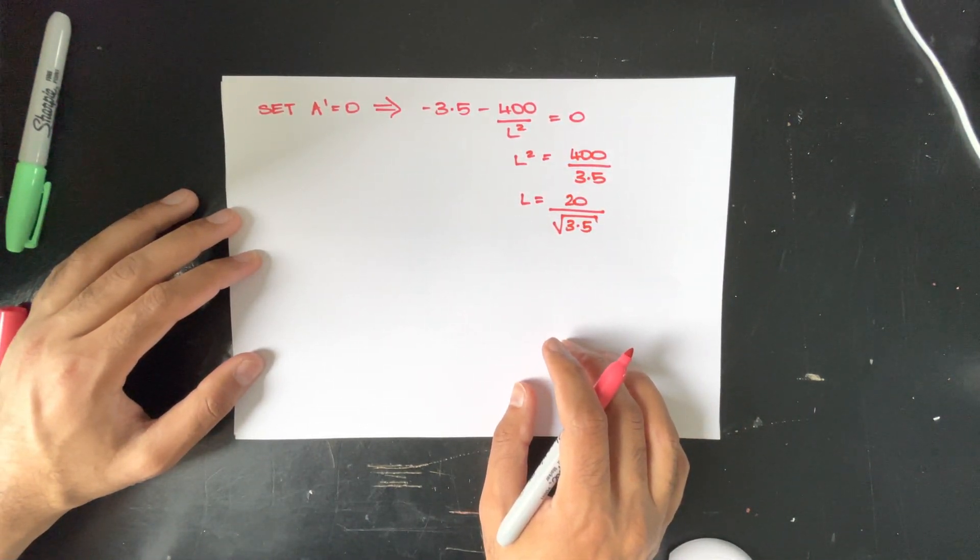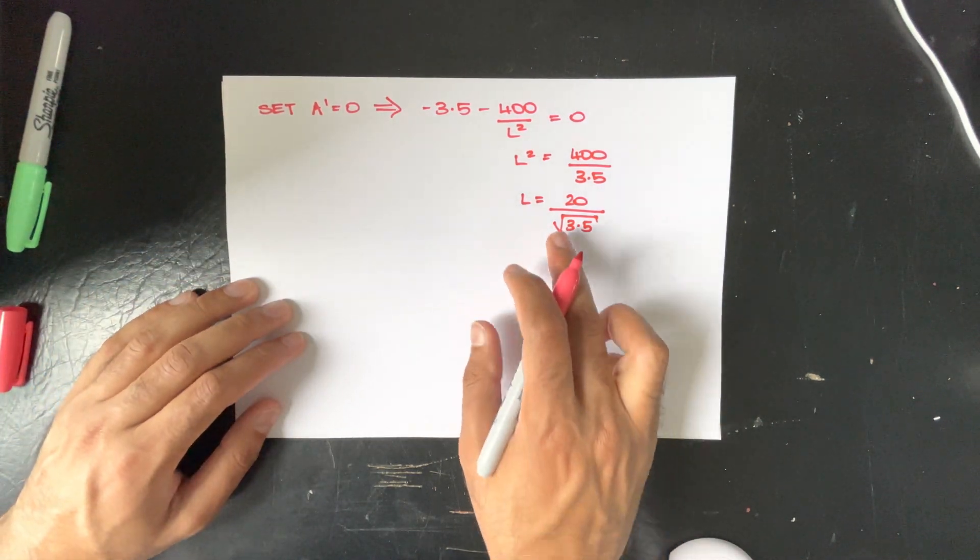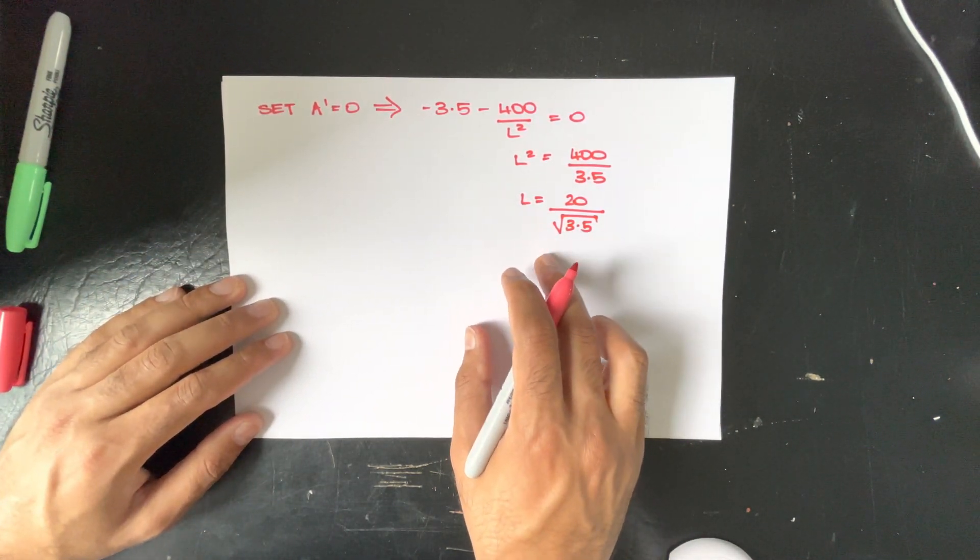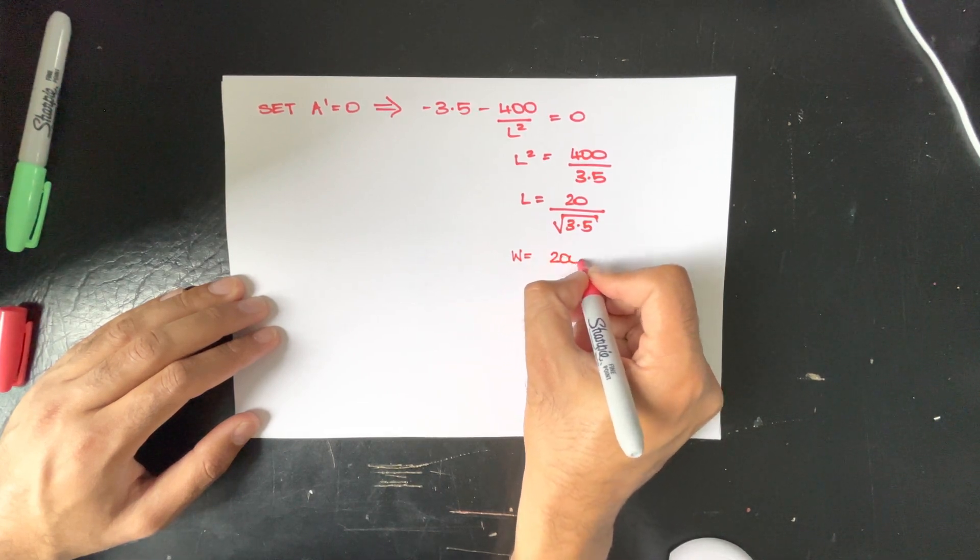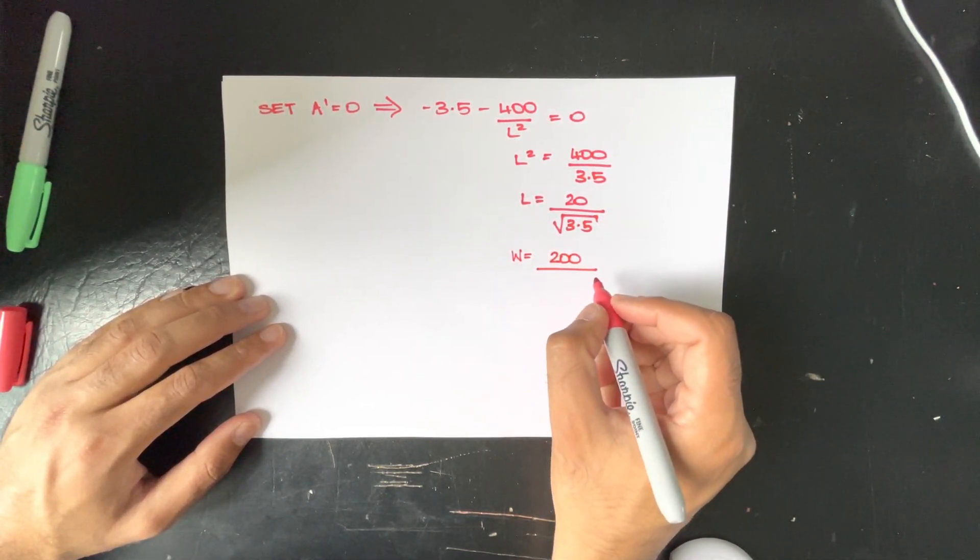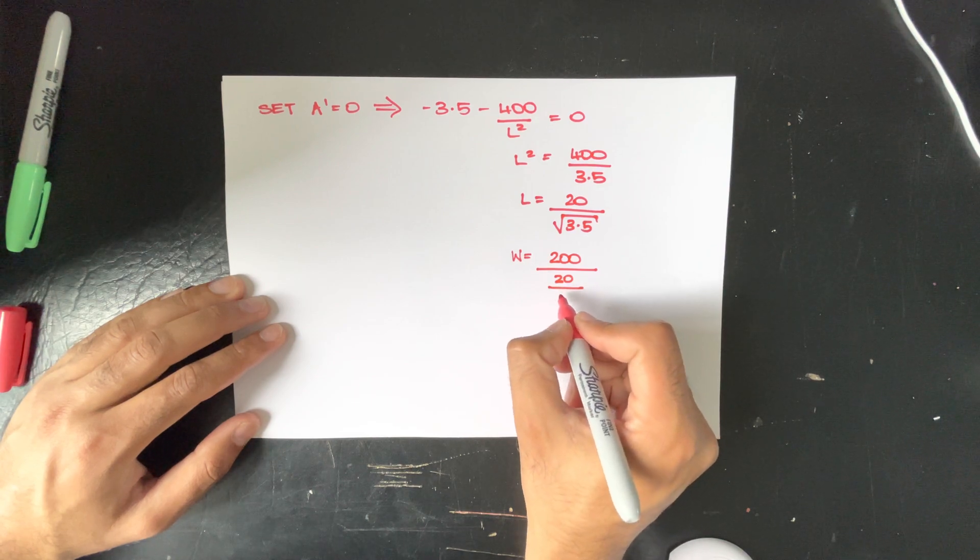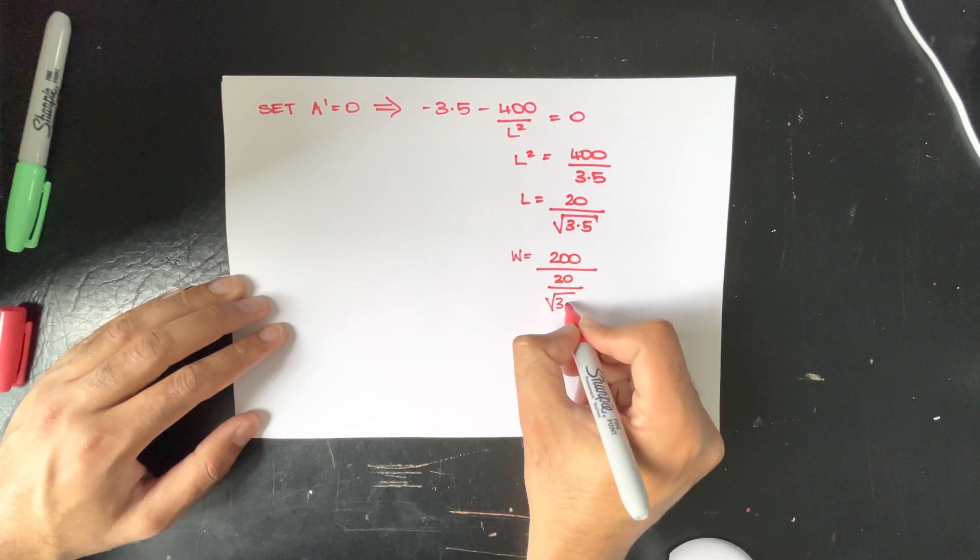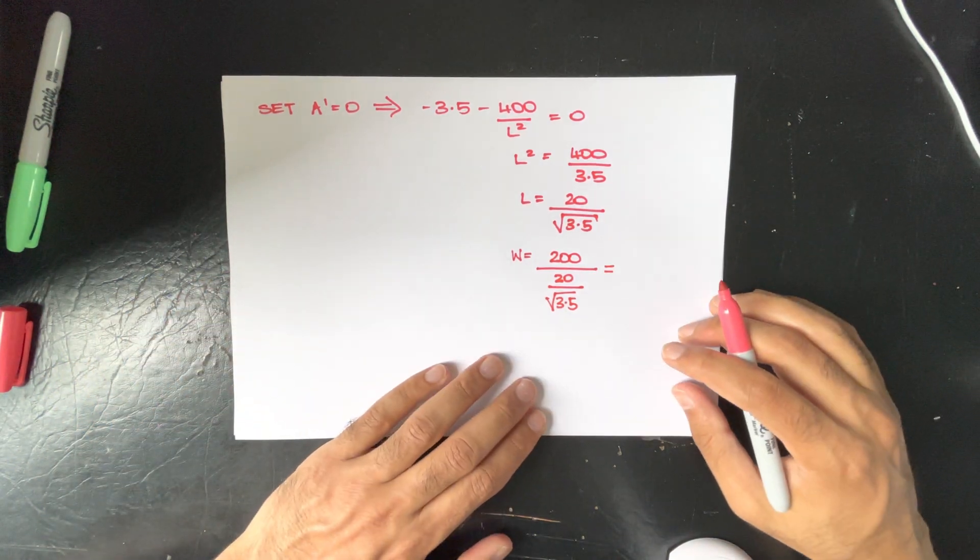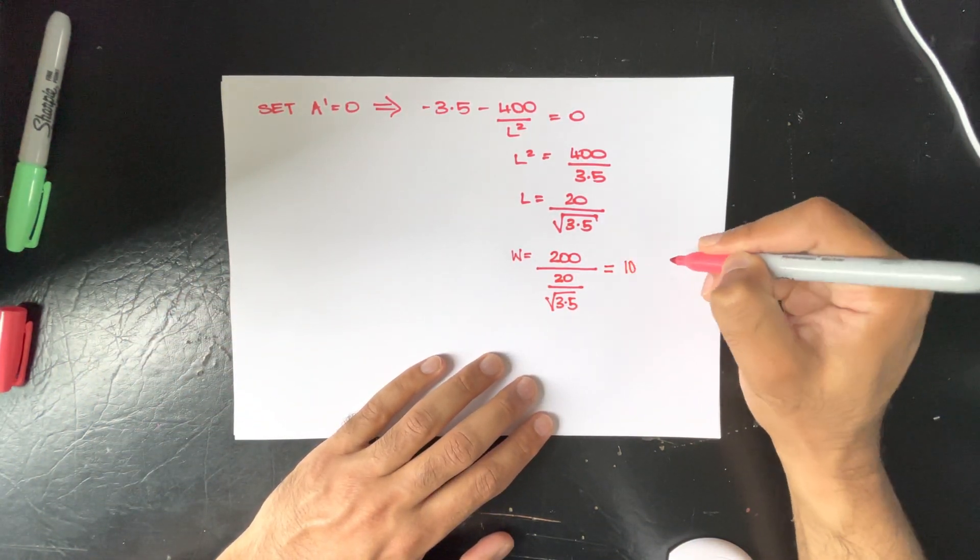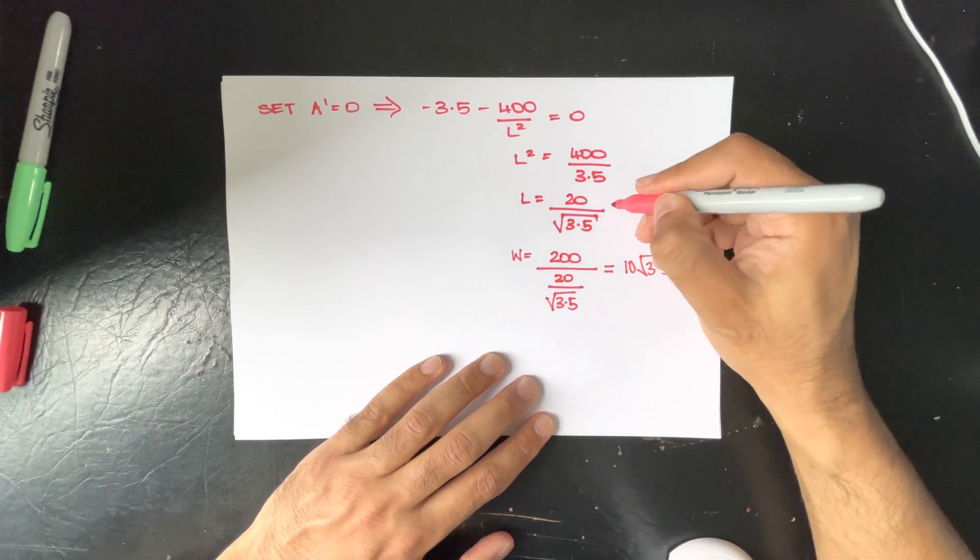Now we can solve for its width by putting this back into our constraint function. So we will have a width of 200 being divided by 20 over the square root of 3.5 and we will get 10 square root of 3.5 inches.